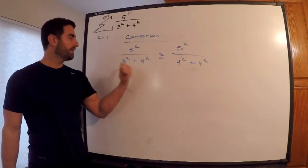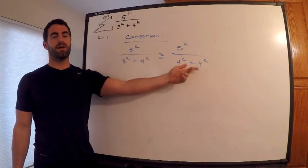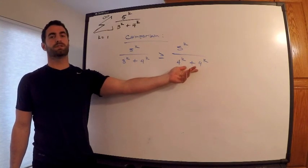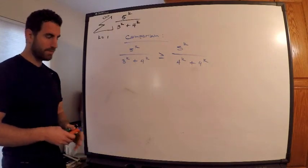The denominator increased from 3^k to 4^k. If the denominator is larger, that means this number is smaller, so this number is smaller than this one. And this is true for k greater than or equal to 1.